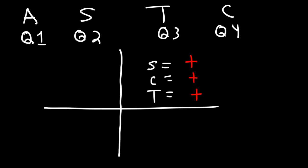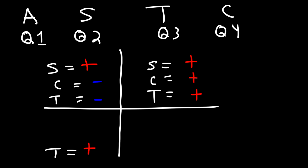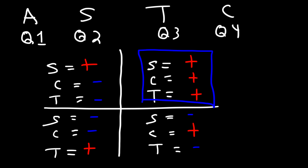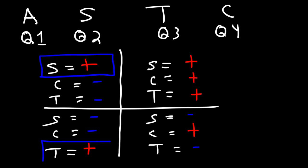T (Take): in quadrant 3, only tangent is positive — sine and cosine are both negative. C (Calculus): in quadrant 4, only cosine is positive — everything else is negative.